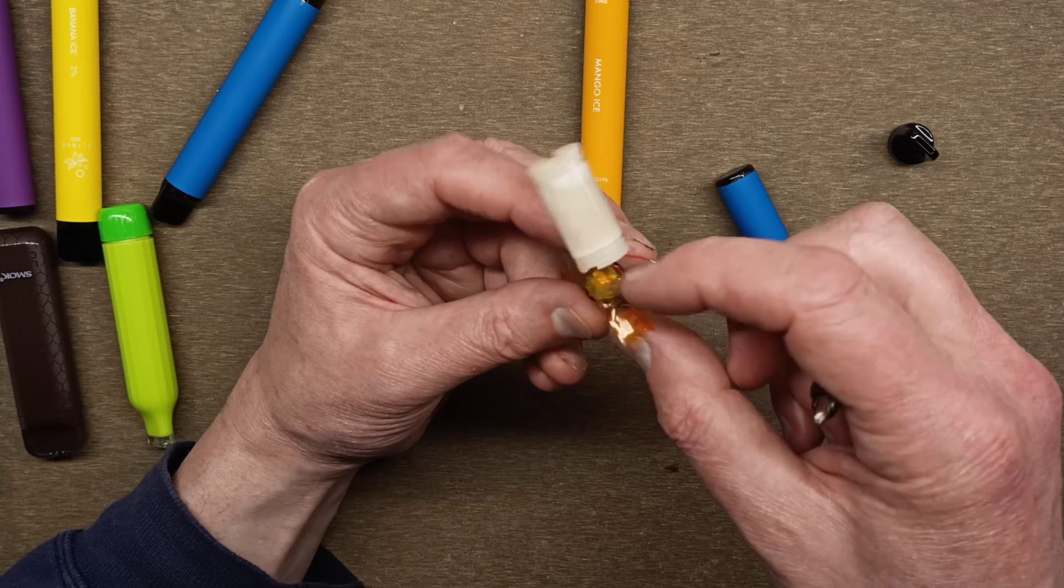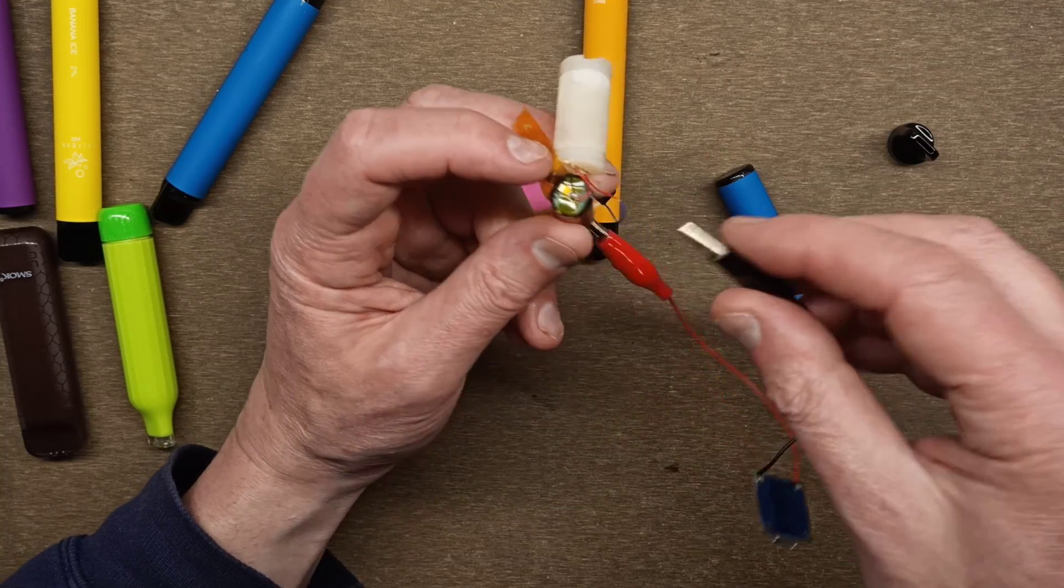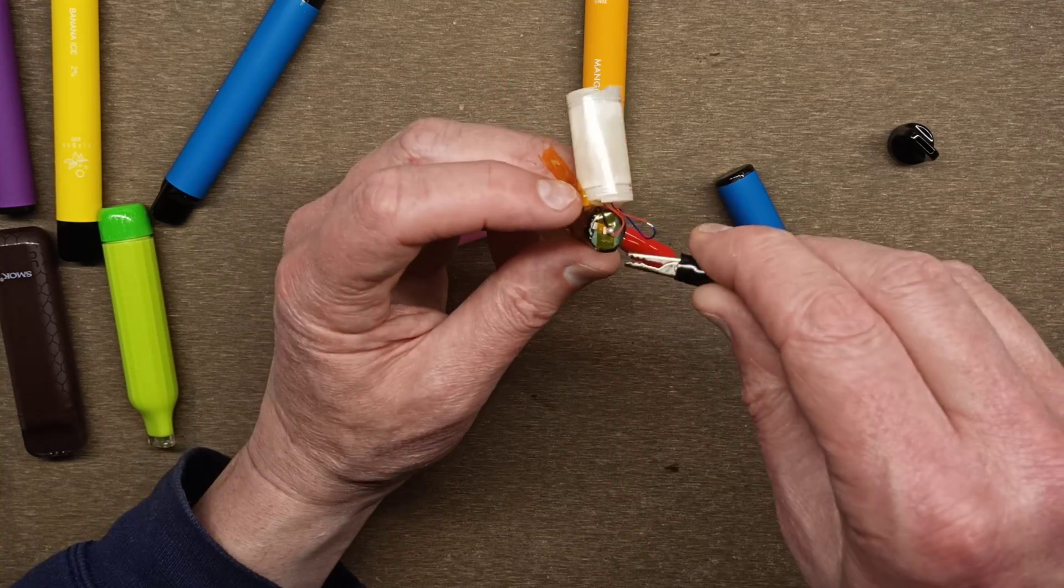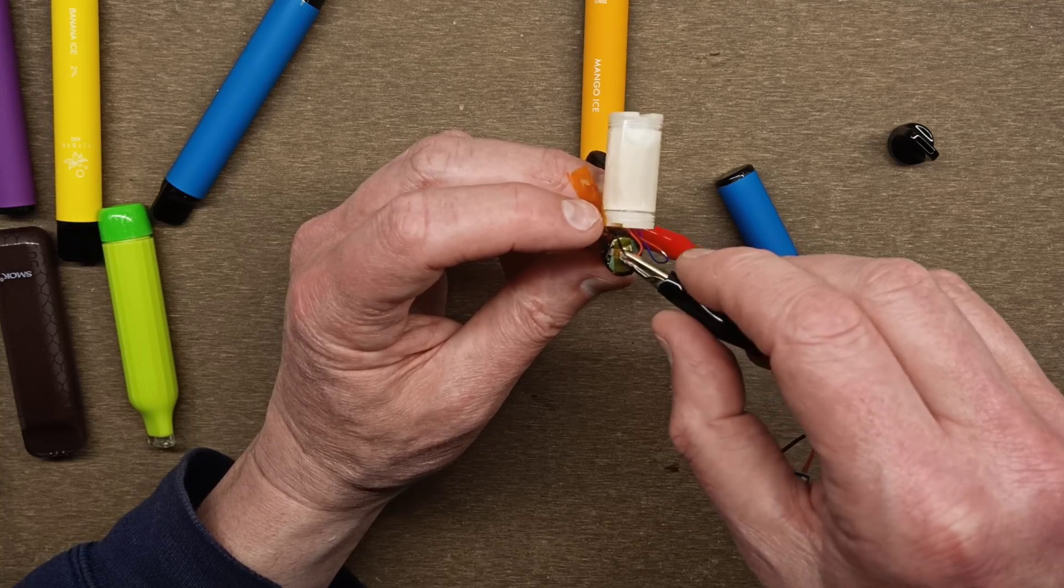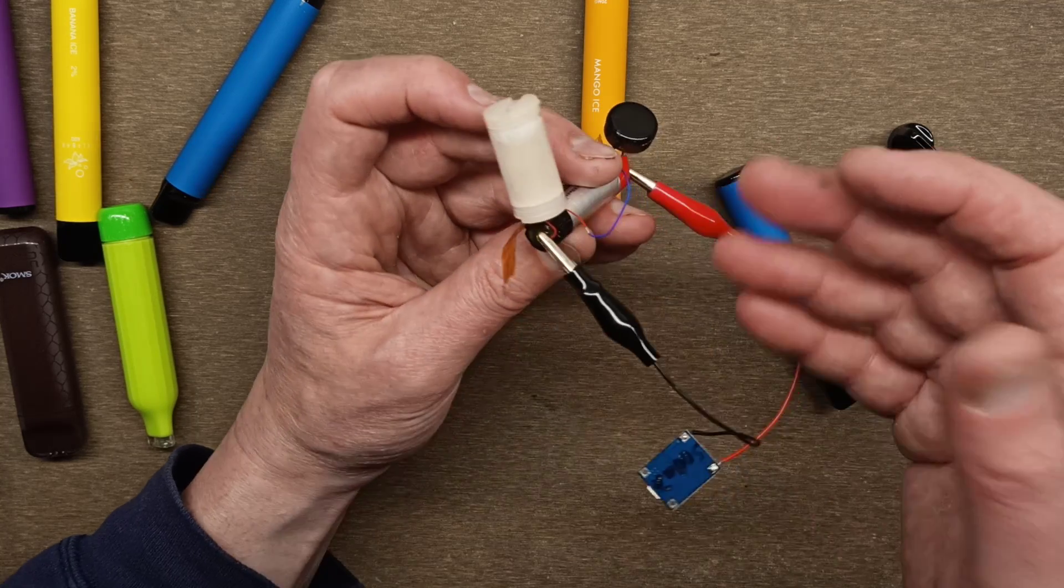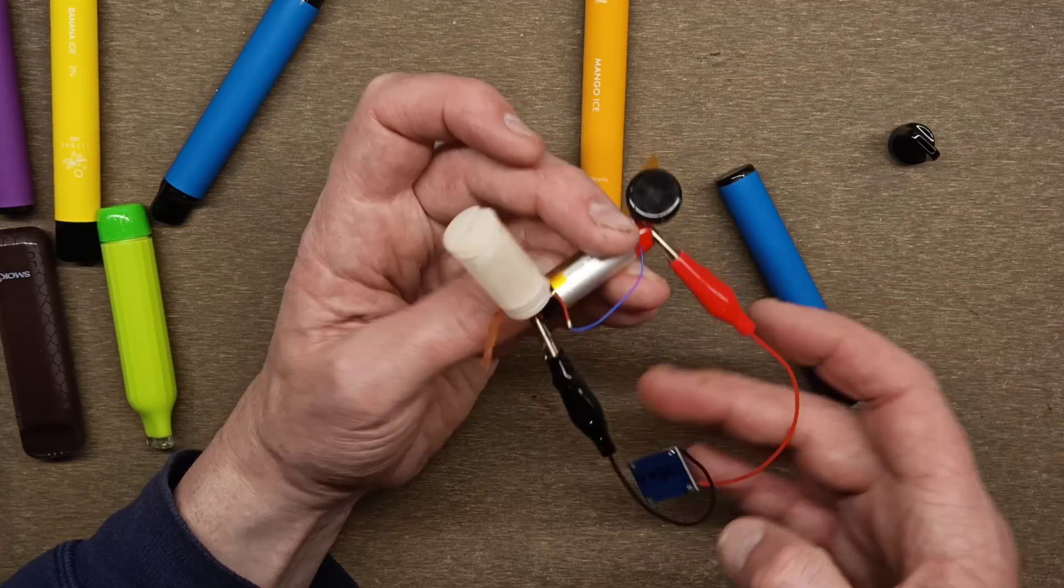If it's not got the tape on it, double check anyway by looking at the markings on the battery. You'll usually find they've got something like a plus and minus symbol marked at each end.